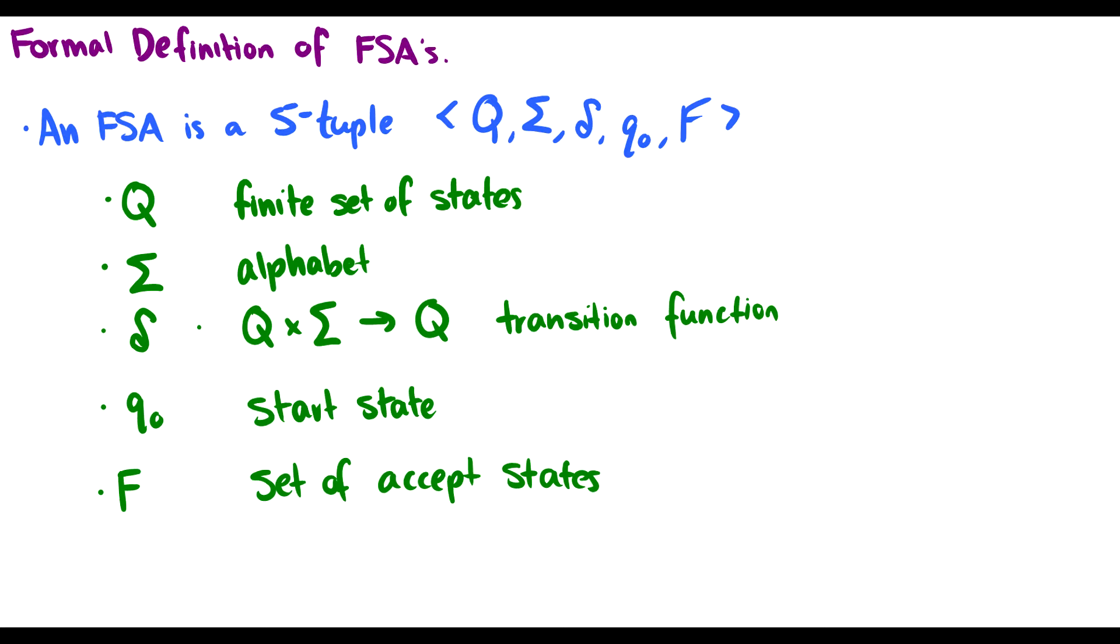So an FSA is a five-tuple consisting of Q, which is the finite set of states. These are represented by our circles. We have sigma, an alphabet, which consists of the symbols we allow, so A, B, C all the way up to Z in English.